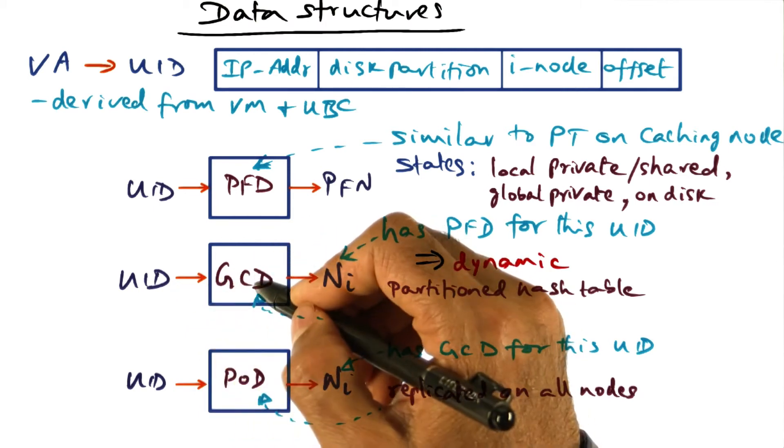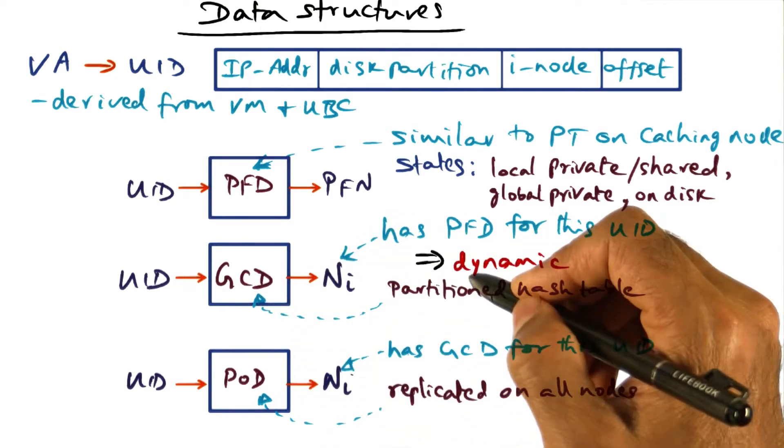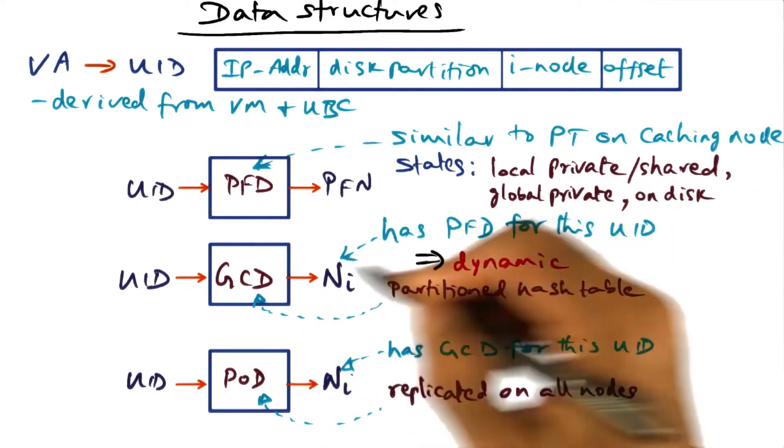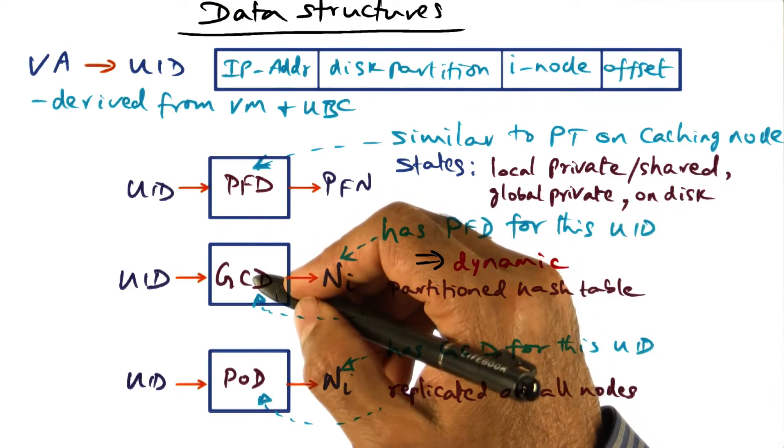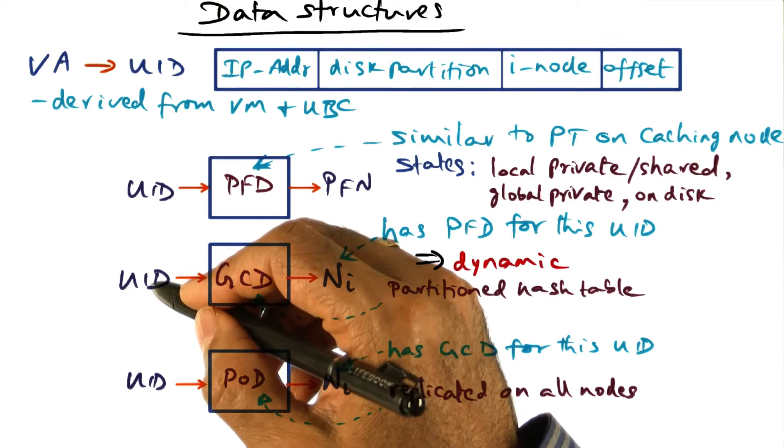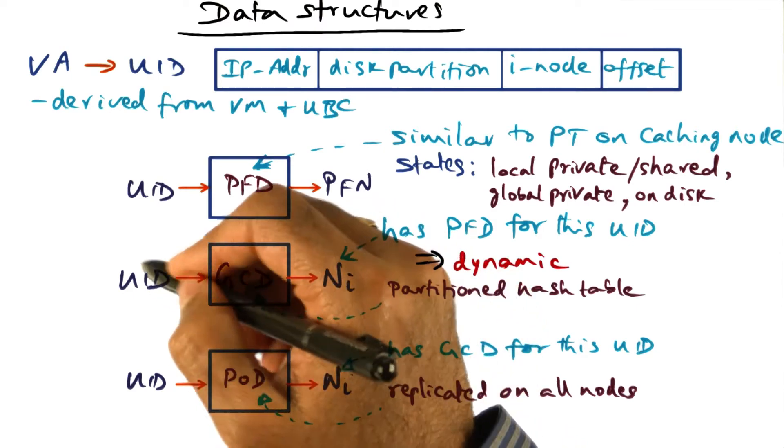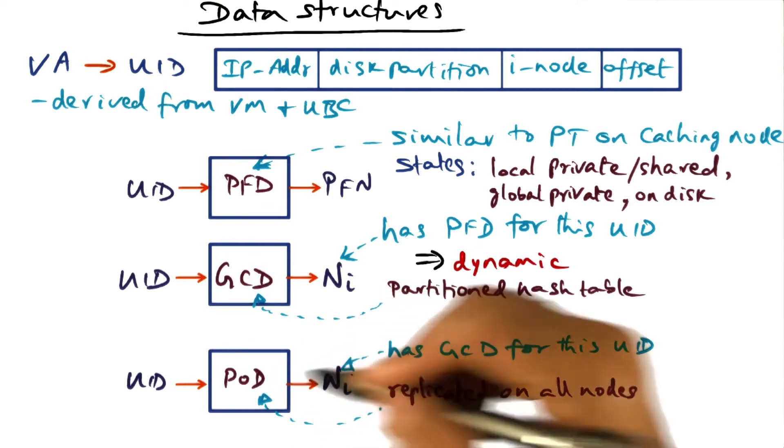Given a UID, it has to know which GCD it has to consult in order to know which node has the PFD that corresponds to this UID. So we need another data structure that tells us, given a UID, which node has the GCD that corresponds to this UID.